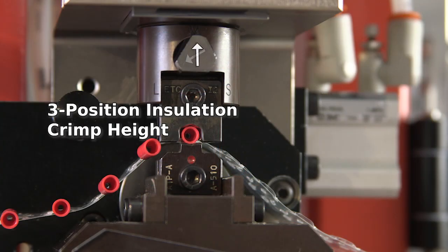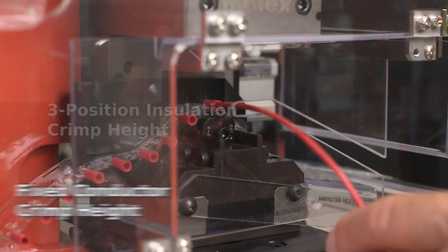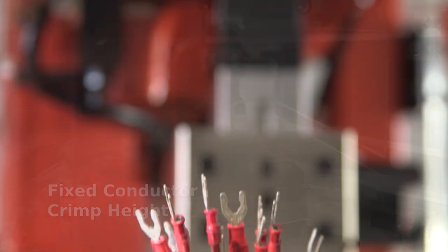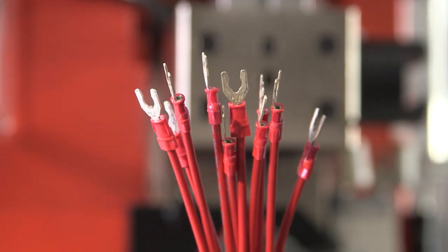Insulation crimp height can be adjusted to one of three settings. A fixed conductor crimp height ensures that each press stroke results in a complete and consistent termination.